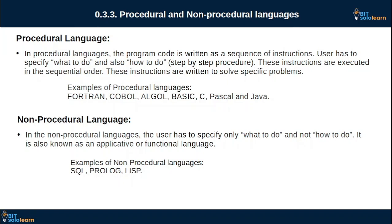For the procedural language examples: Fortran, COBOL, ALGOL, Basic, C, Pascal, and Java. So Java is called a procedural language. For the non-procedural language, the user has to specify only what to do and not how to do it. SQL is called a non-procedural language.